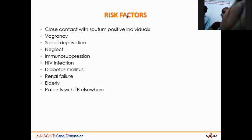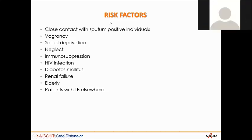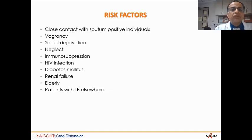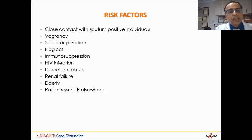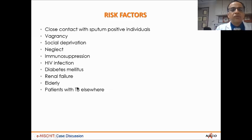Risk factors include close contact with positive individuals, vagrancy, social deprivation, malnutrition, and neglect. In transplant patients, immunosuppression is a very important component — we often see reactivation with spread to the kidney. HIV and diabetes are also key risk factors. Renal failure alone is less important, but if combined with diabetic kidney disease, it is far more common. Elderly patients, and obviously patients with TB elsewhere, should be closely monitored and investigated for tuberculosis.